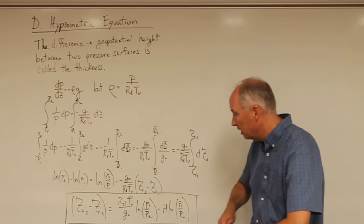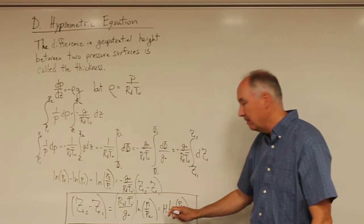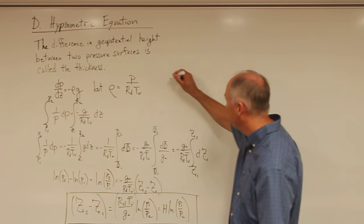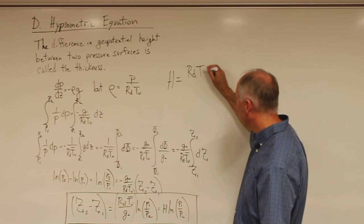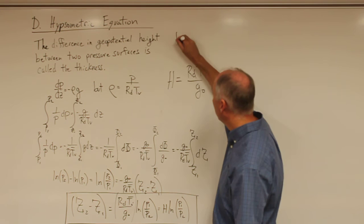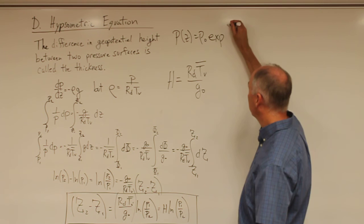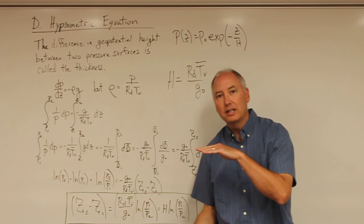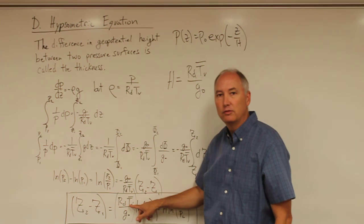We can also redefine this equation: the term r_d times T_v-bar over g0 is redefined as the scale height of the atmosphere. The scale height describes how pressure changes with height, appearing in the equation p(z) = p0 times exp(−z/H). So we now have an equation that allows us to calculate the thickness of the layer between two pressure surfaces, as long as we know the average virtual temperature of the air in that layer.